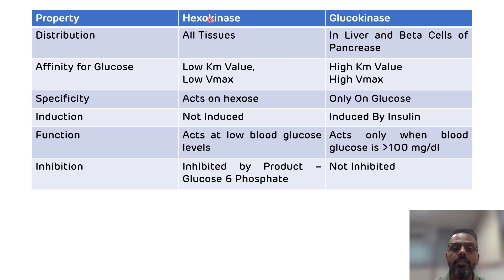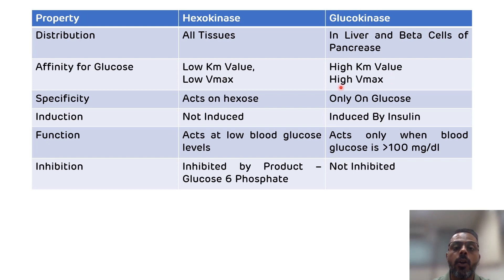The second difference: hexokinase has high affinity for glucose, meaning it has a low KM value and low VMAX value. While glucokinase has low affinity for glucose, meaning it has a high KM value and high VMAX value.